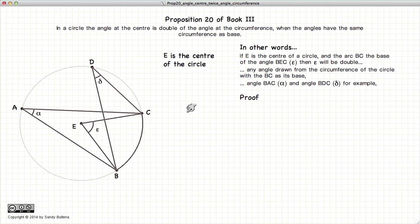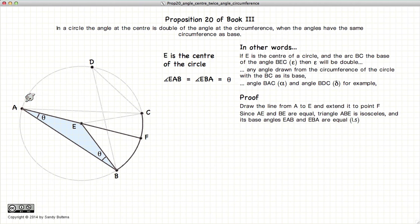So to prove this, let's draw a line from A to E and extend it out to the point F. Now if we look at this triangle ABE, AE and EB are equal. If they are equal, then it is an isosceles triangle, and as an isosceles triangle, these two angles will be equal.